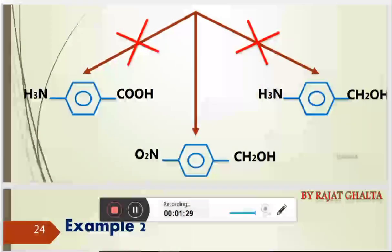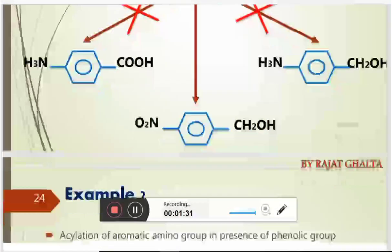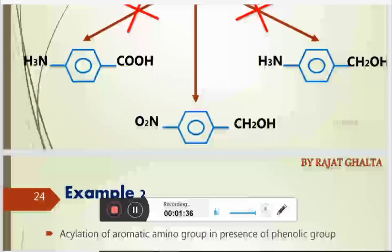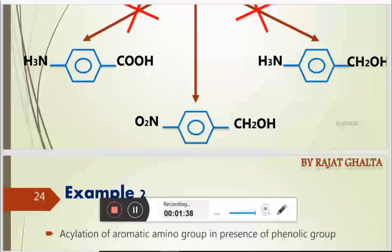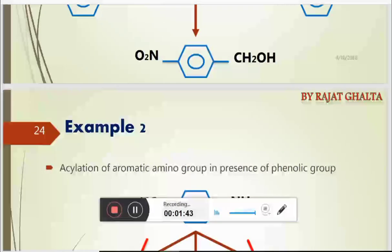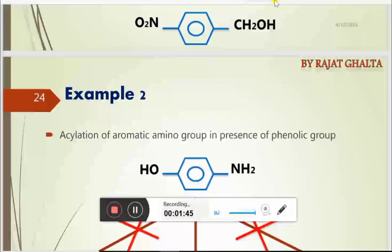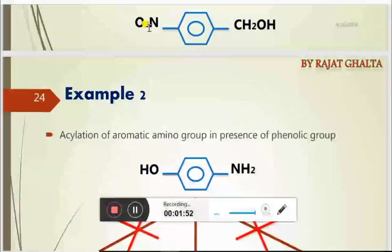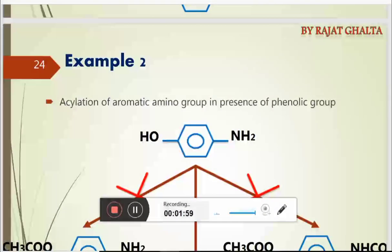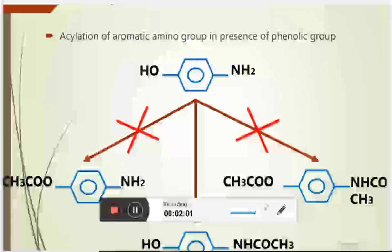This depends upon the reagent. Such reactions are called chemo-selective because the functional groups present are being selectively reacted with the reagent. There is a critical role of the reagent — certain reagents can preferentially reduce the acid group, while certain other reagents reduce the nitro group. So there is an involvement of chemoselectivity.